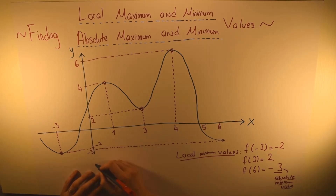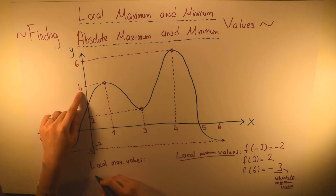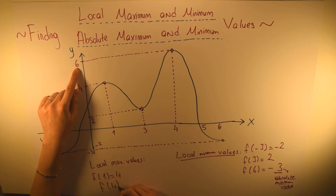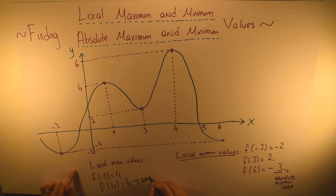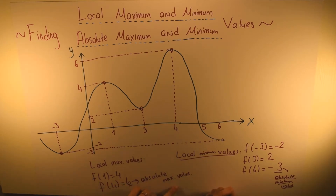The same logic applies to our maximum values. Our local maximum values are: when x equals 1, y equals 4, so f(1) equals 4; and when x equals 4, y equals 6, so f(4) equals 6. Since 6 is greater than 4, 6 is our absolute maximum value. We have two local maximum values but only one absolute maximum value.